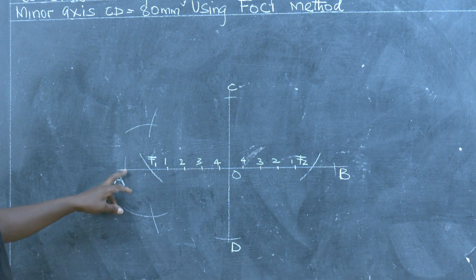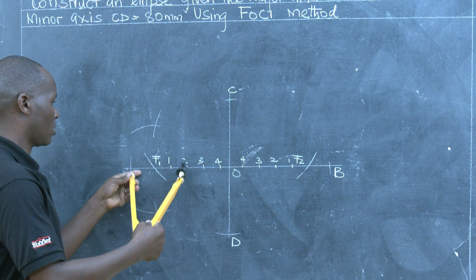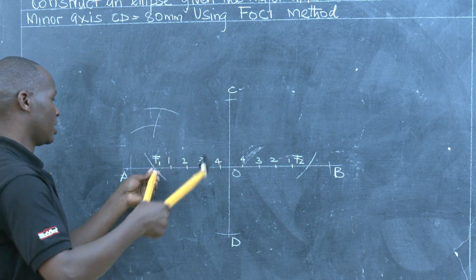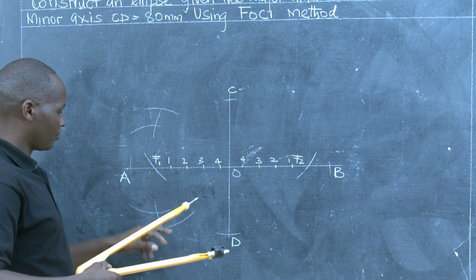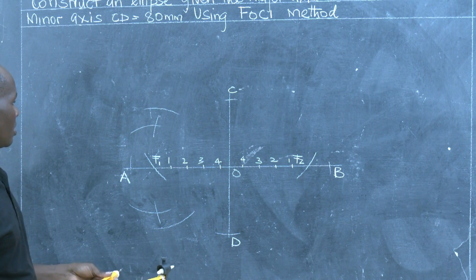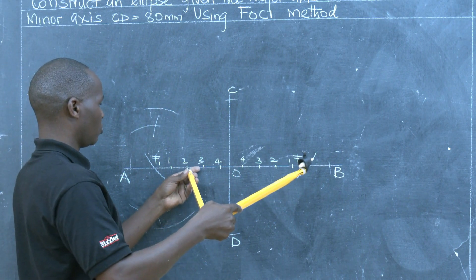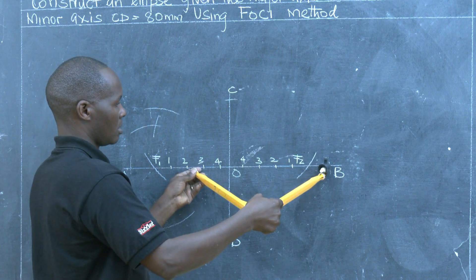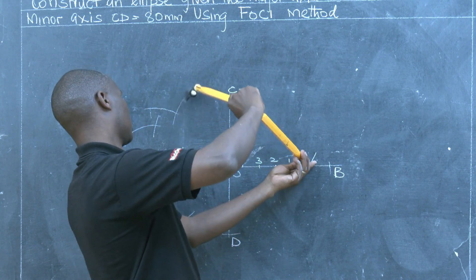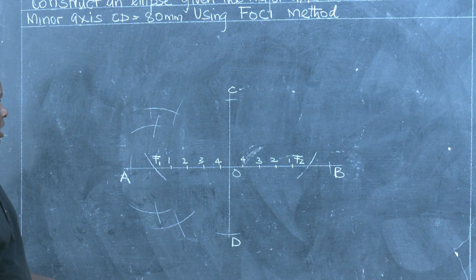We repeat the same process: we get radius A2, then using F1 as the center, we describe an arc above and below. Then we get radius B2, and using F2 as the center, we describe another arc to cut the previous one.